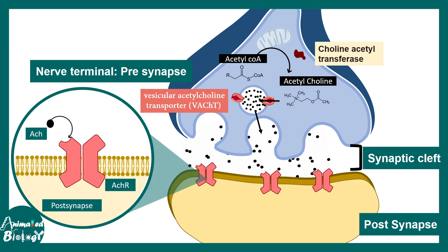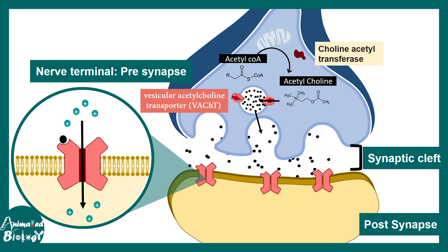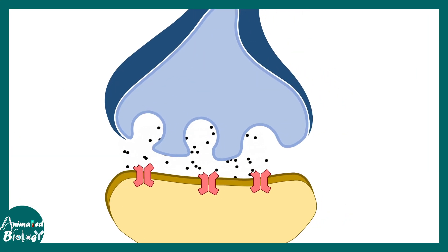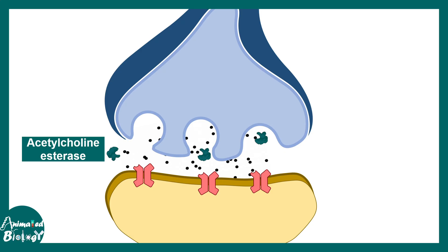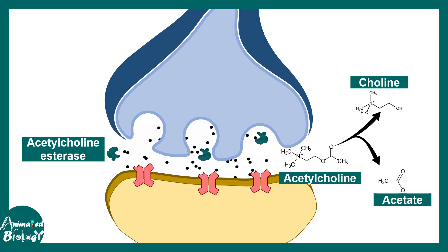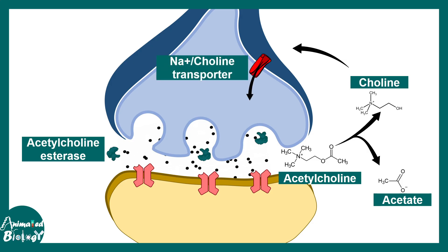Acetylcholine then binds to ligand-gated ion channels in the postsynapse, opening them, which leads to membrane depolarization and triggers postsynaptic events. Acetylcholinesterase is the enzyme that breaks down acetylcholine into choline and acetate. The choline is then re-uptaken by the presynaptic terminal, where it can be further used to generate new acetylcholine.